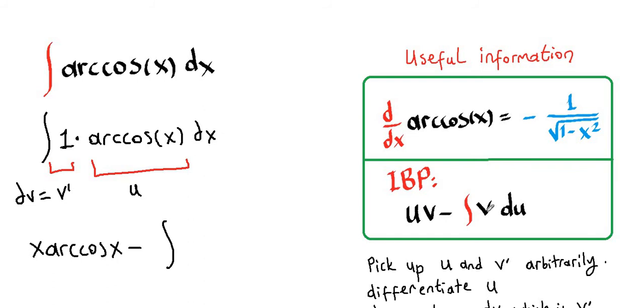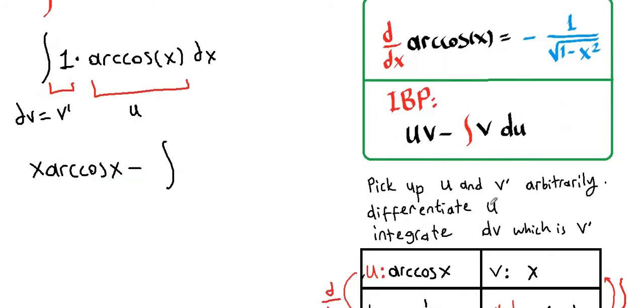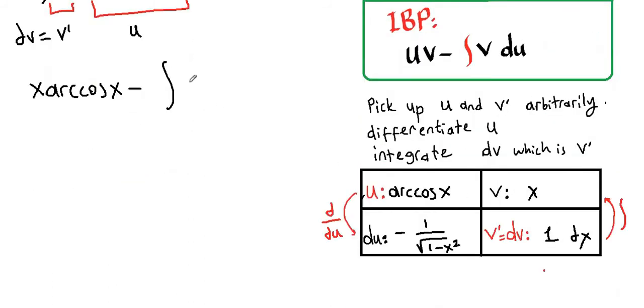minus integral of v du. You can use the table you created here. v is x, and du is negative one over square root of one minus x squared dx.